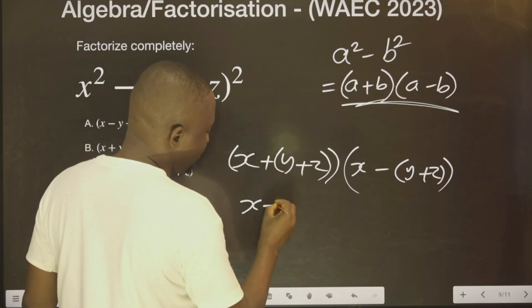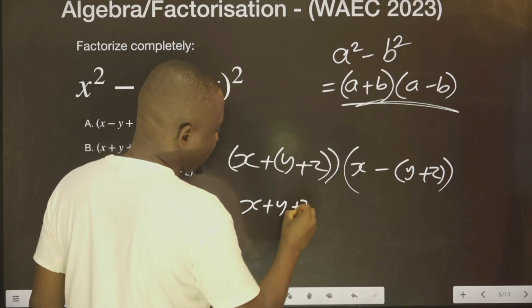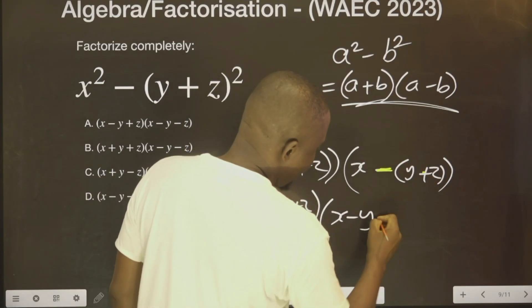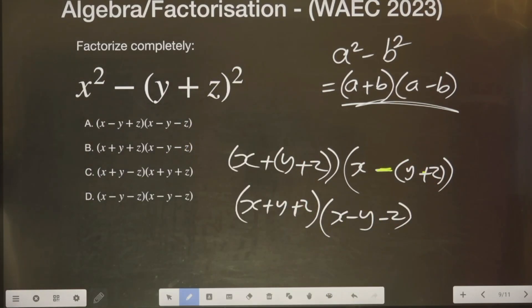This is X now plus Y plus Z. This is X minus Y minus Z. Just one step. So you can see this is the answer.